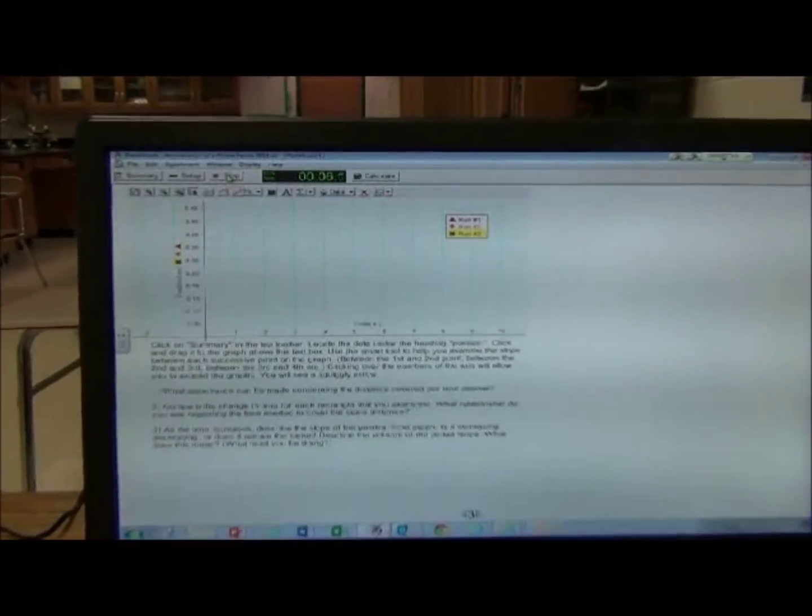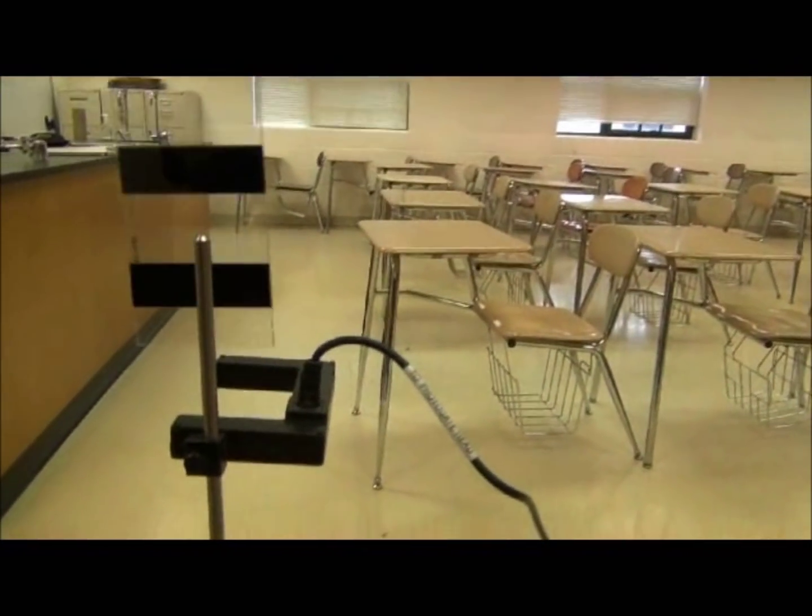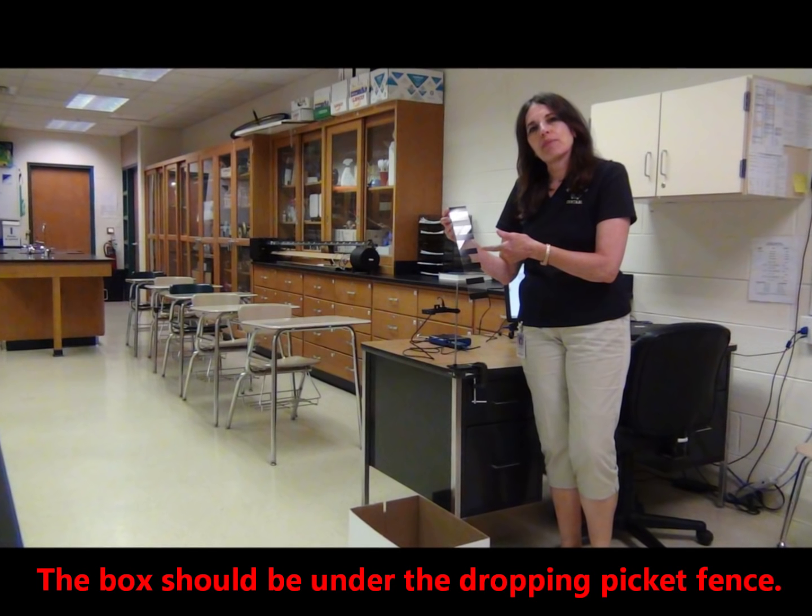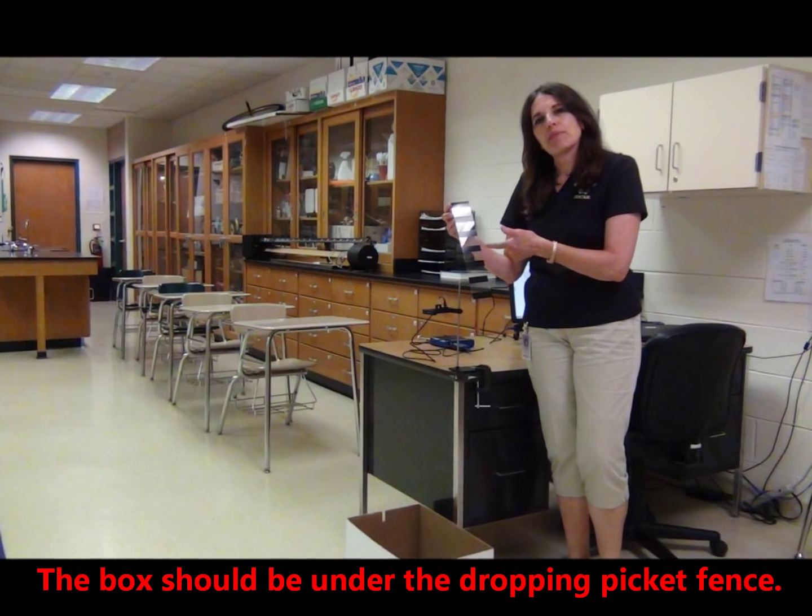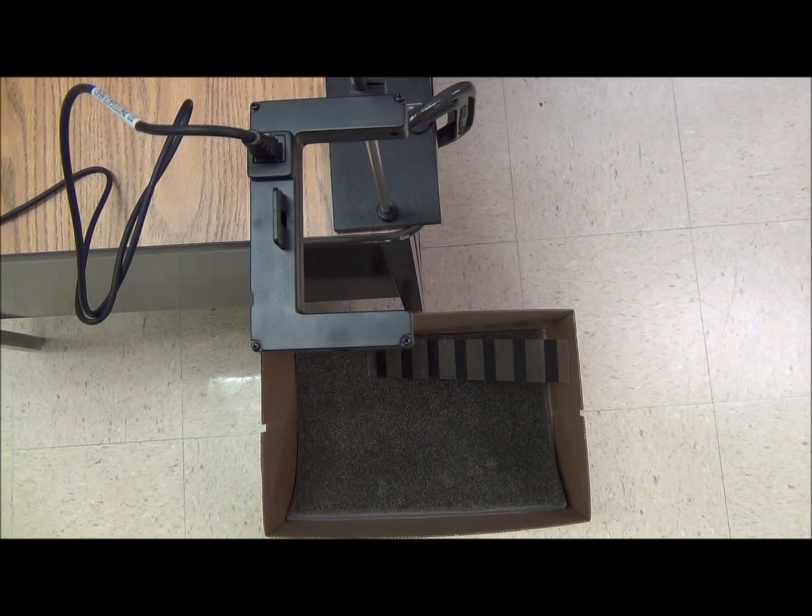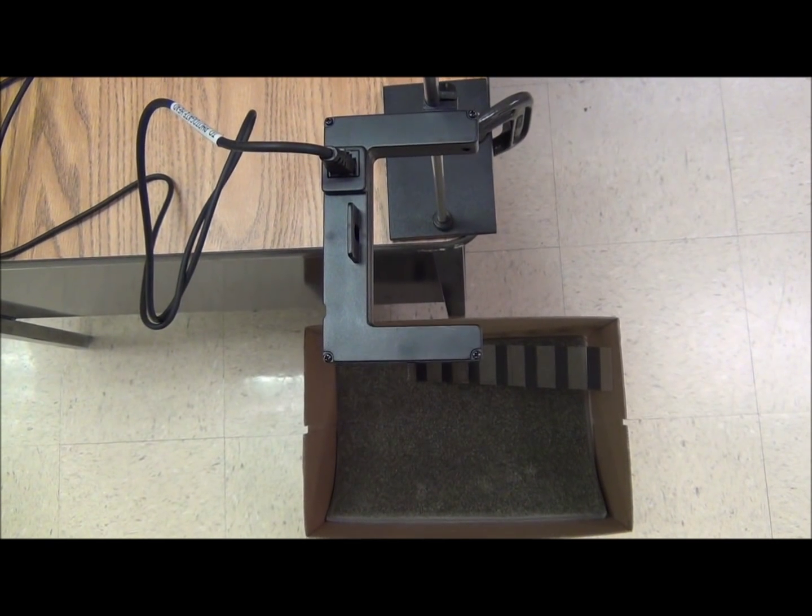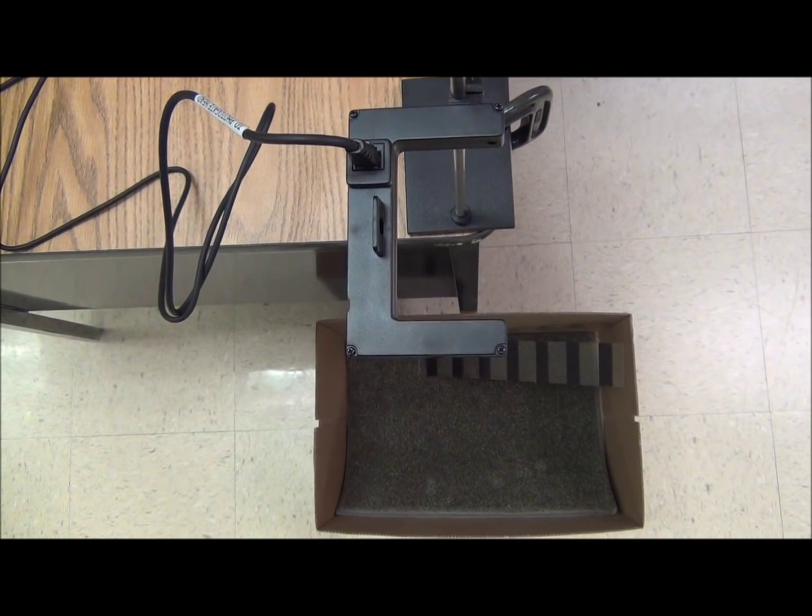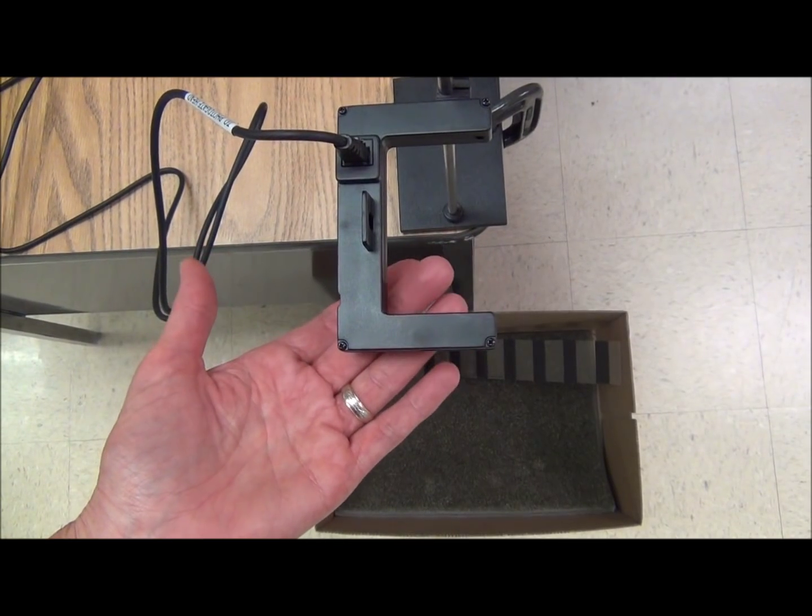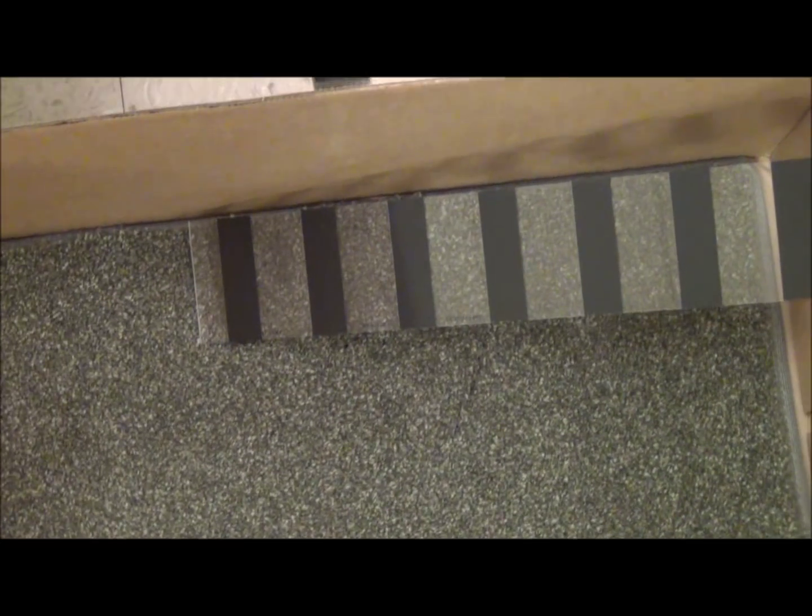I've started the timer in Data Studio. The next thing I'm going to do is have my lab partner hold the picket fence above the photo gate. Each lab station has a box with a carpeting scrap in it. This box has been placed conveniently beneath the arms of the photo gate to catch the picket fence when it falls.